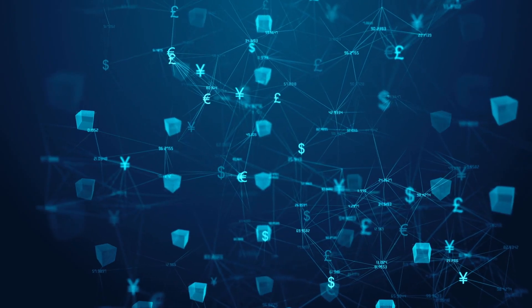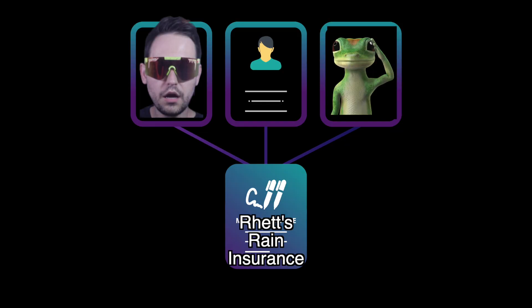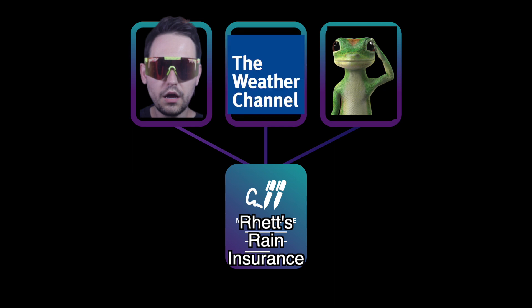No one can tell from the outside looking at the Bitcoin blockchain that this multi-sig transaction is part of a smart contract, because from the outside it looks just like any other regular multi-sig payment. So in the case of the raining-on-your-wedding example, I would have a key, the company insuring me against rain would also have a key, and then the third key would be held by the Oracle — in this case, something like weather.com or some trusted data provider that could tell us whether or not it actually rained during the wedding.